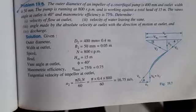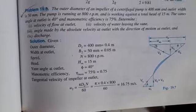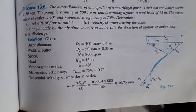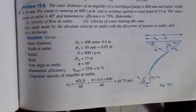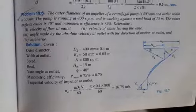2. Velocity of water leaving the vane. 3. Angle made by absolute velocity at outlet with the direction of motion at outlet. And 5th is discharge.